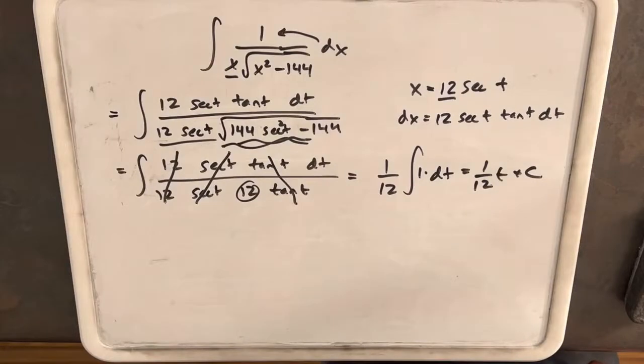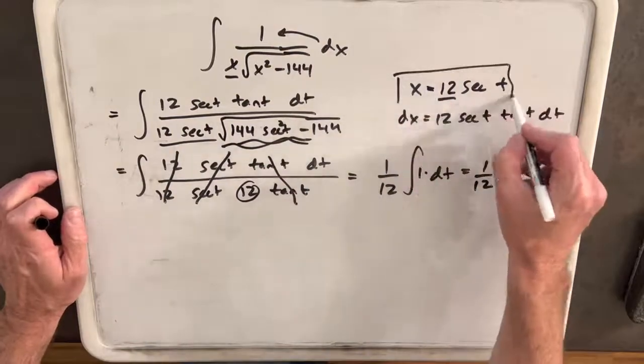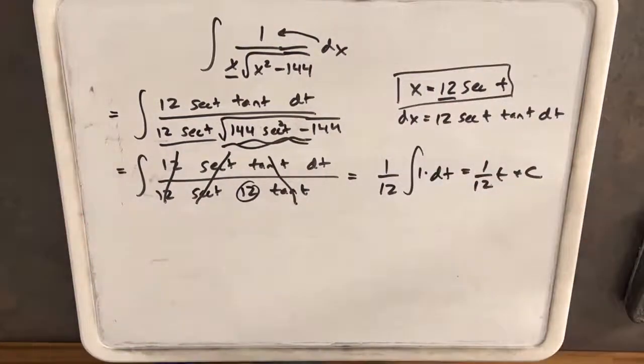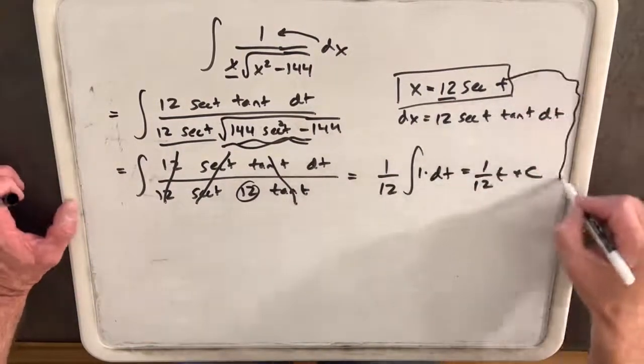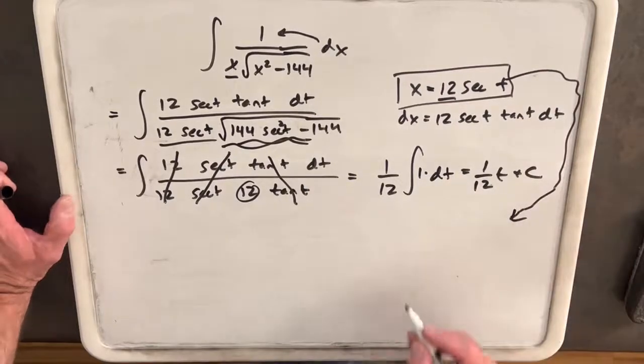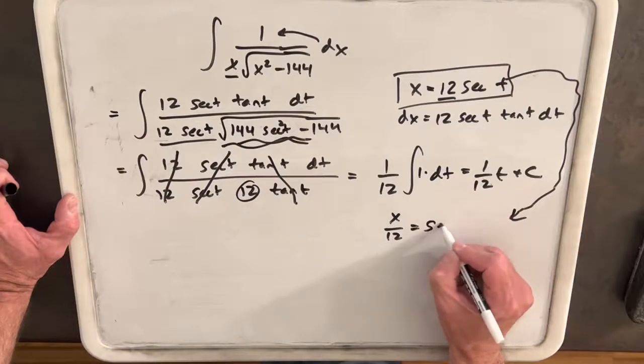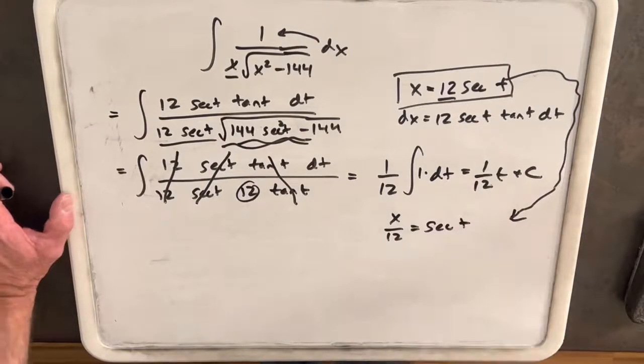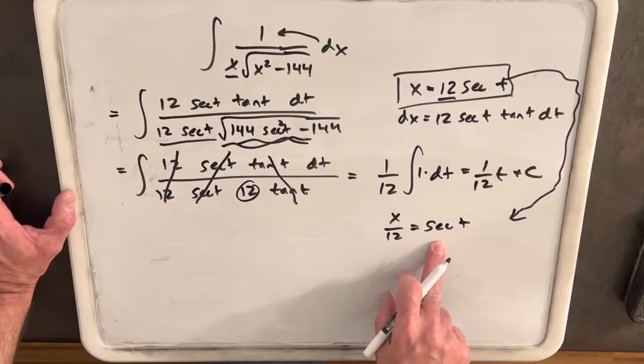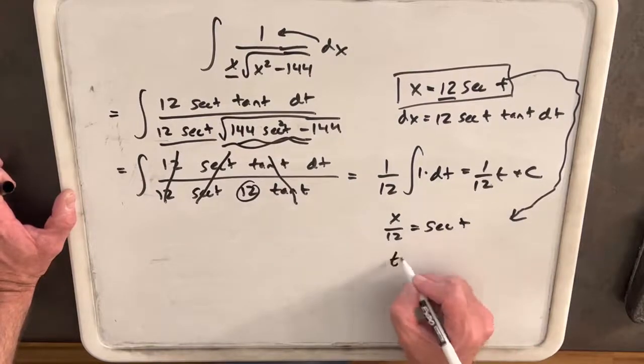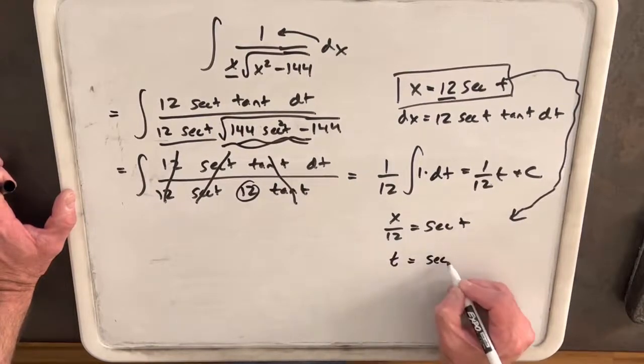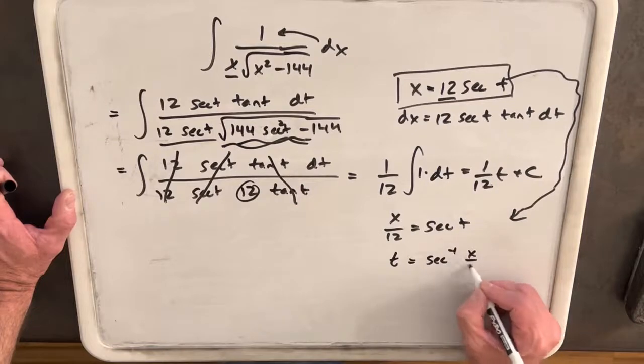We're almost done, but we want this in terms of x, not t. Let's go back to this equation. We'll divide both sides by 12, so we'll have x over 12 equals secant t. Then take secant inverse on both sides, so we're left with t equals secant inverse of x over 12.